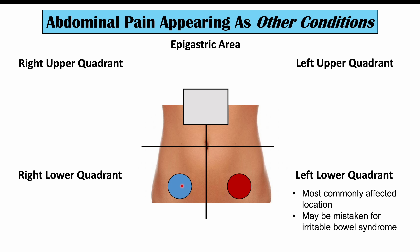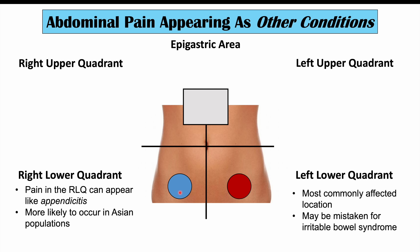In some cases, the pain can be in the right lower quadrant, which is a more atypical finding. If it is in the right lower quadrant, it can be mistaken for appendicitis — an inflammation of the appendix, which is located in the right lower quadrant. This right lower quadrant pain in diverticulitis is seen more commonly in Asian populations. One way to distinguish it from appendicitis is that appendicitis often starts around the umbilicus and then slowly moves and becomes more focalized to the right lower quadrant.